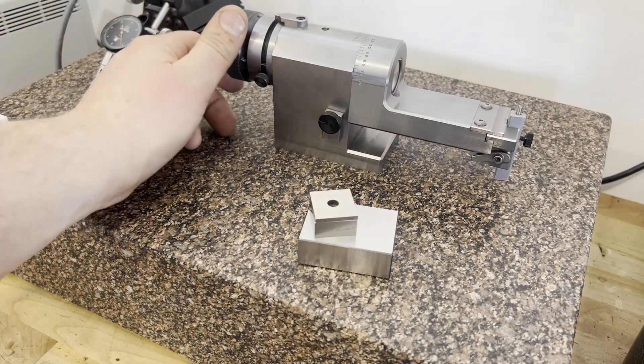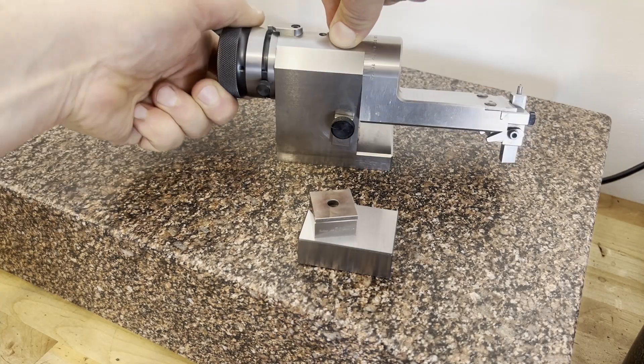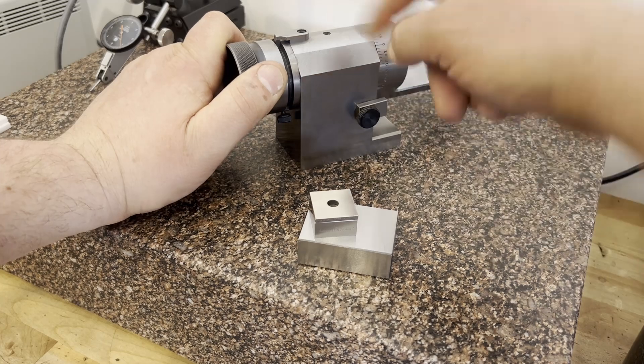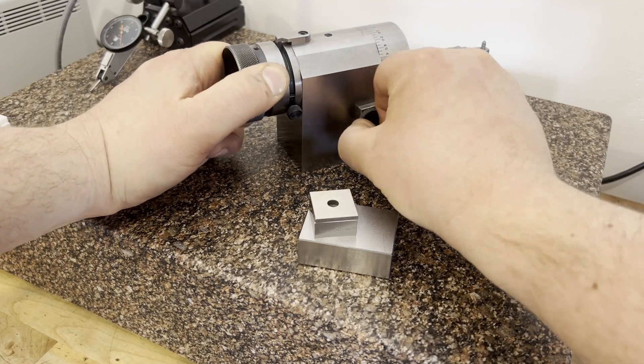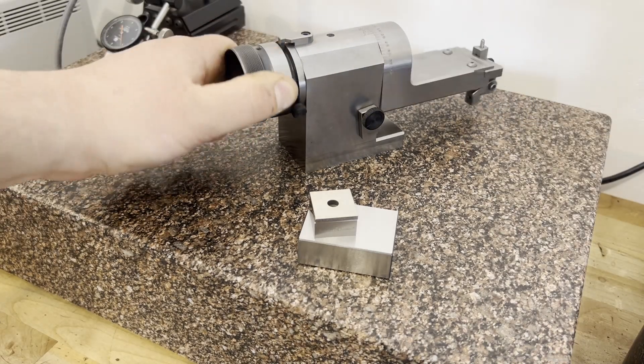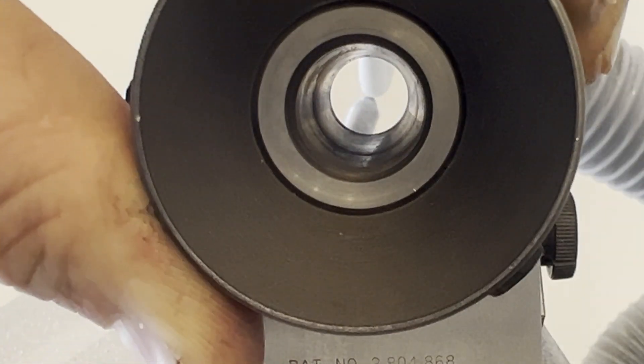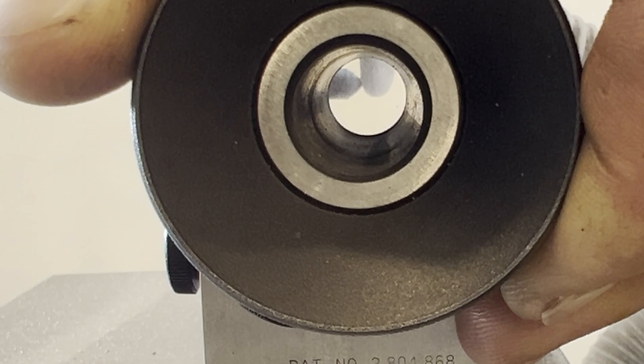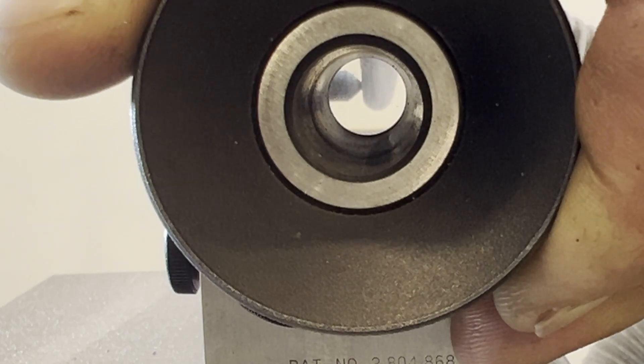When we go and start dressing our wheel, it'll produce a 60 thou whether it's just on the corner or we do a full rad is determined by if we have these stops in. So if we had the stop on it would just put the radius on a corner, but with the stop off we can make a full wheel radius. Here it is doing the dressing.